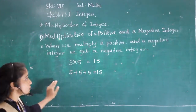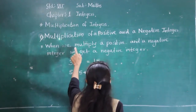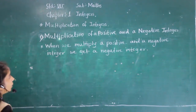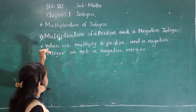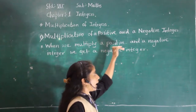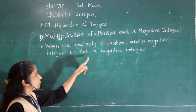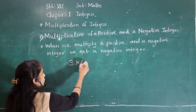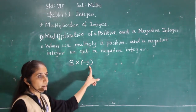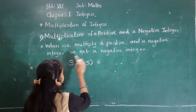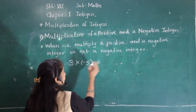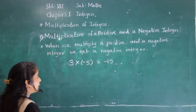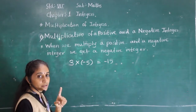Now we will see this with integers also. When we multiply a positive and a negative integer, we get a negative integer. For example, positive integer 3 and negative integer minus 5 — so 3 times minus 5. 3 fives are 15, but for the answer we use the negative sign, so the answer is negative.